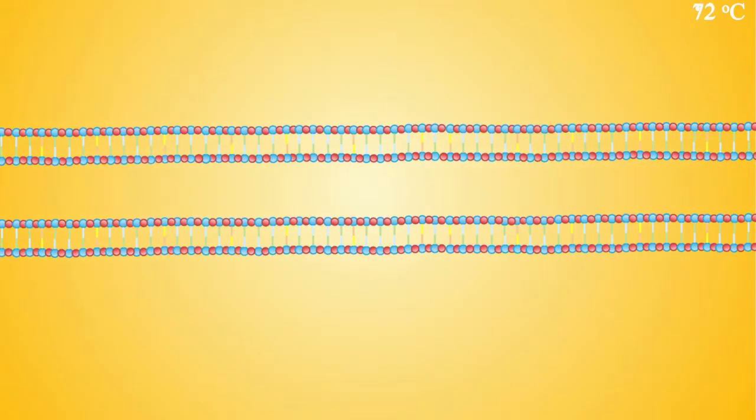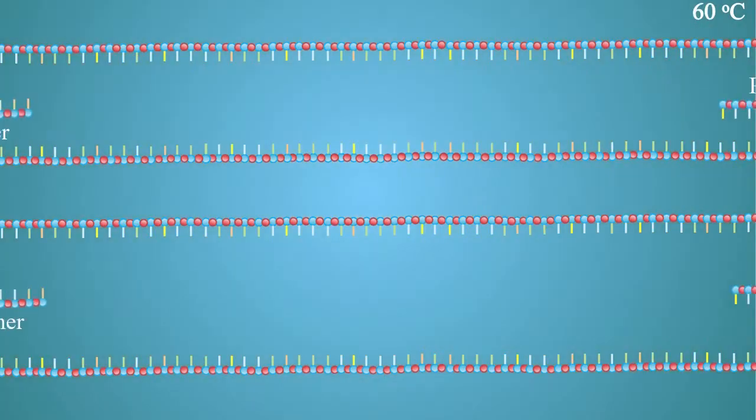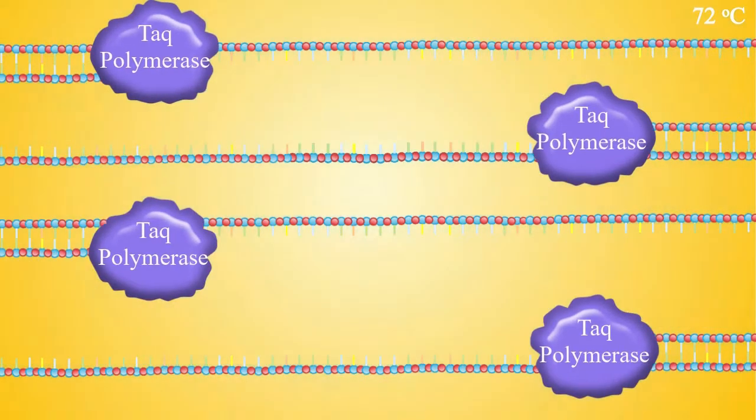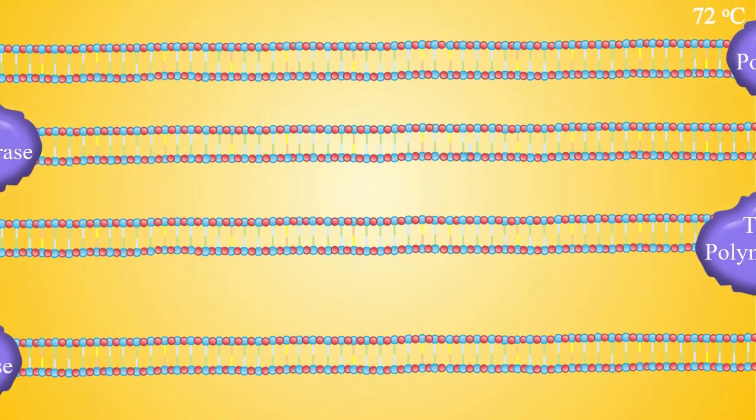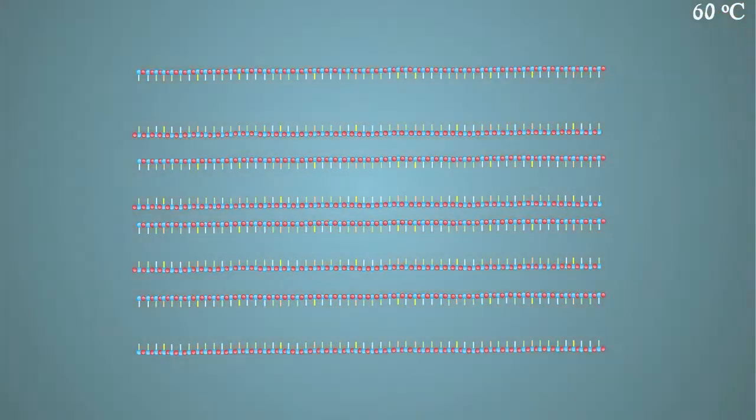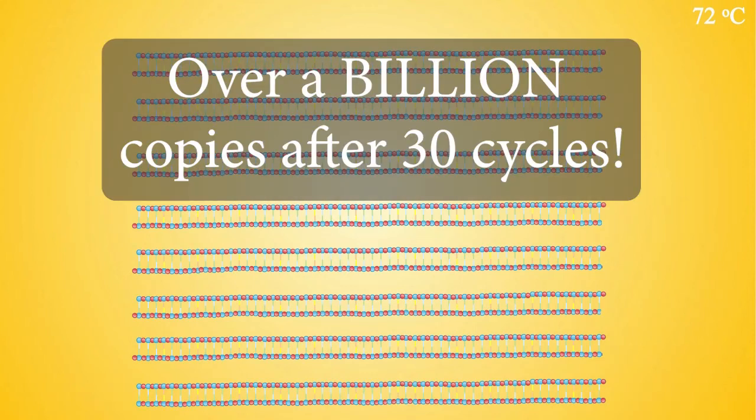This process of heating and cooling the PCR mixture is repeated many times, and every time it is repeated, the amount of DNA doubles. This can make a lot of DNA. After 30 cycles, for example, a single molecule of DNA can become over a billion copies.